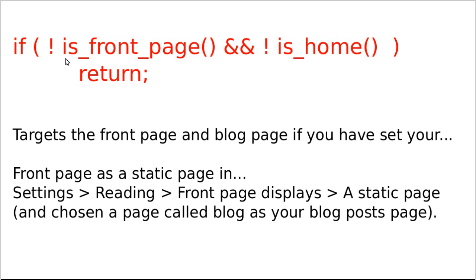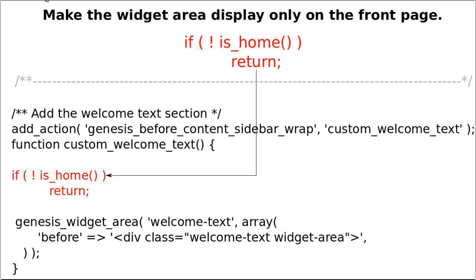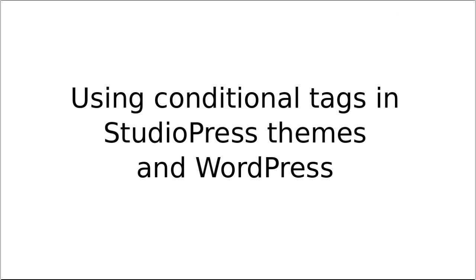Here's another conditional example: if it's not the front page and it's not the home page (blog page), don't run the code. This is where the code goes — I made a previous video about adding a welcome text widget area. We got that code from Brian Gardner's website, and all we needed to add was this if statement. Originally it appeared on every page of the site, but the conditional code lets us choose which pages or posts to display the widget area on.